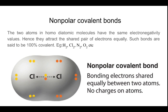Moving on to non-polar covalent bonds: the two atoms in covalent homodiatomic molecules have the same electronegativity values, hence they attract the shared pair of electrons equally. Such bonds are said to be 100% covalent. Examples include the hydrogen molecule, chlorine molecule, nitrogen molecule, and oxygen molecule.